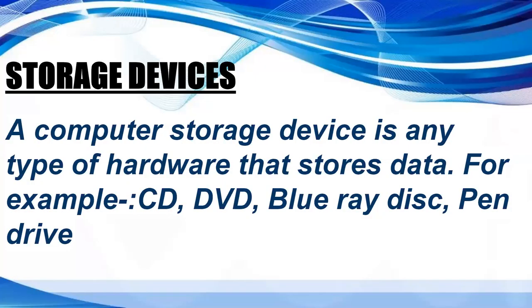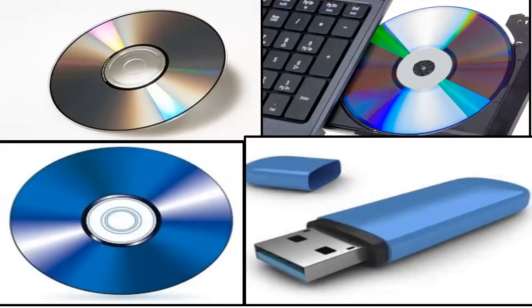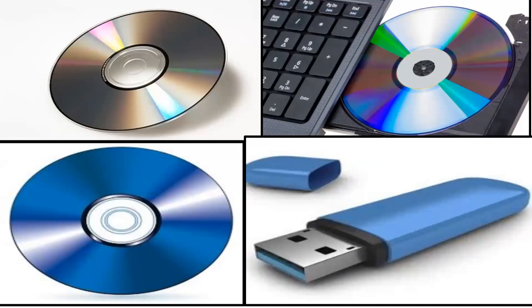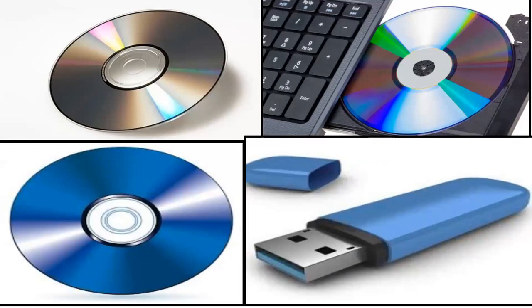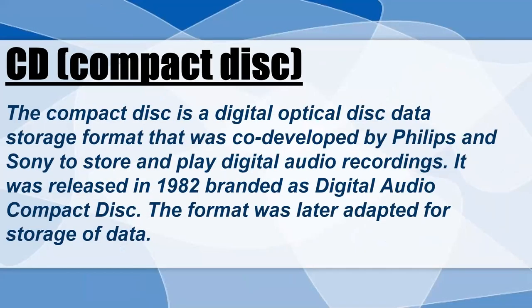Storage devices. A computer storage device is any type of hardware that stores data — for example, CD, DVD, Blu-ray disc, pen drive, etc. Here you can see images of storage devices. CD means compact disc. The compact disc is a digital optical disc data storage format co-developed by Philips and Sony to store and play digital audio recordings. It was released in 1982 branded as digital audio compact disc, and the format was later adapted for storage of data.